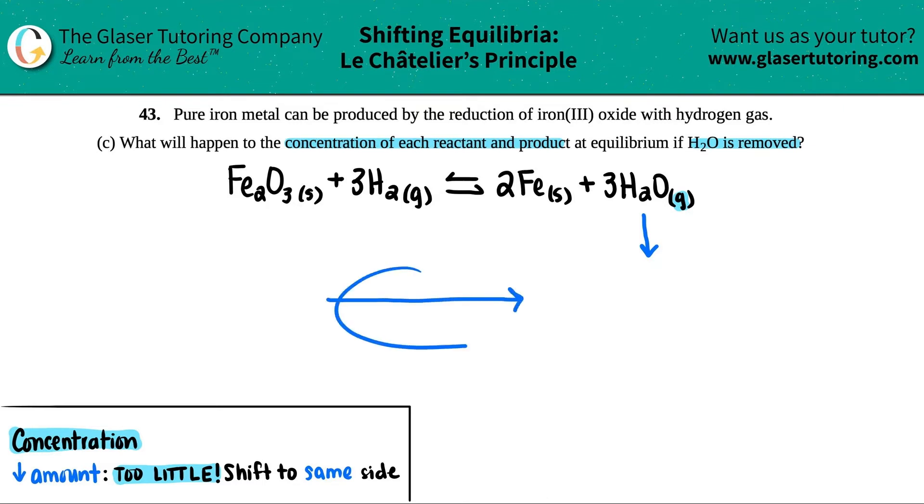Once you put this arrow down, you erase what you just did because now we're going to correct it. What's going to happen? The product side now is going to increase generally speaking, and the reactant side is going to decrease. Now we just got to remember: watch out for those states.